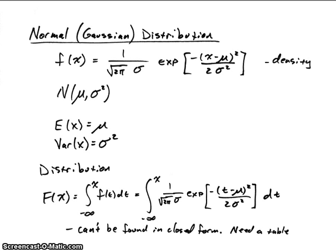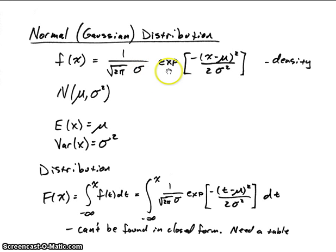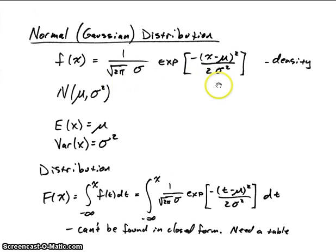For the normal distribution function, we're talking about continuous random variables. The density function for a Gaussian random variable has two parameters, sigma and mu. We have out front one over the square root of two pi times sigma, where sigma is not under the square root sign. Then we raise e to the exponent of minus (x minus mu) squared all over two sigma squared. We can write this density function as N(mu, sigma squared), and the mean of this density function is equal to mu and its variance is equal to sigma squared.